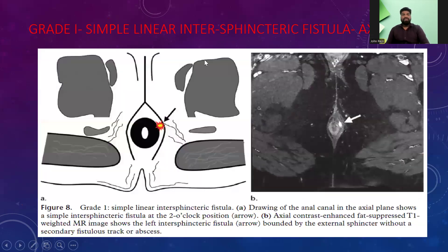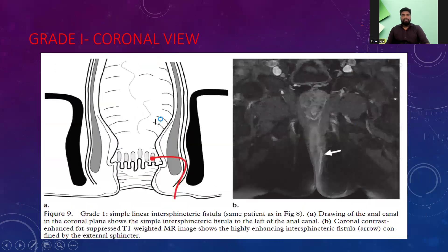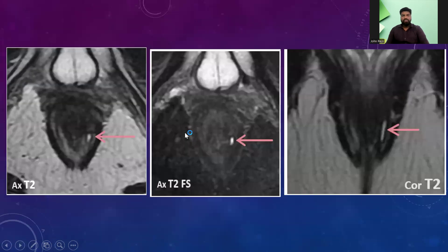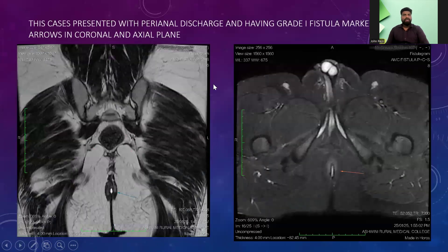Grade 1 is a simple linear fistula, as seen here in the coronal view. These are the actual cases that presented with Grade 1 fistula, presenting with perianal discharge. Zoomed images of the Grade 1 fistula are also shown, presenting with perianal discharge.